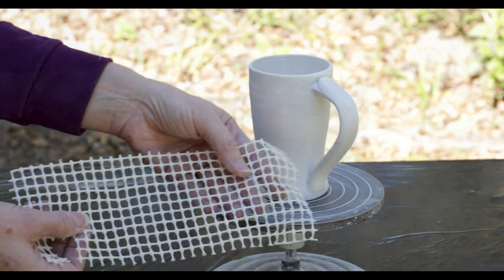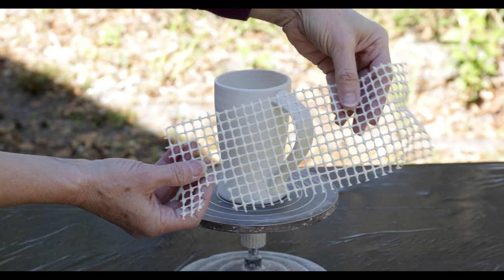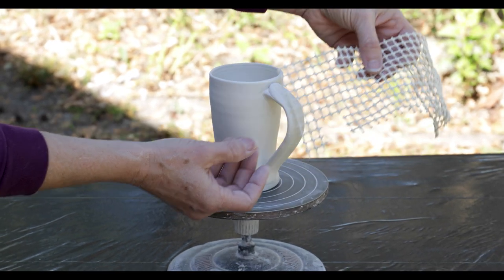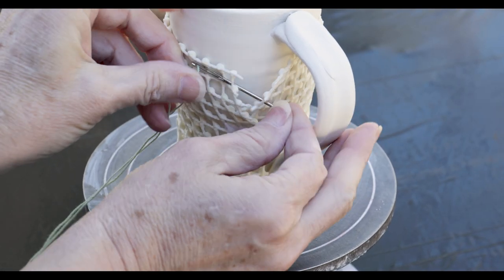For experiment number three, I'll use gridded shelf liner. I cut the shelf liner to fit around the mug and handle. Wrap the liner snugly to the surface and take a couple of stitches to secure it in place, then secure the bottom edge with a thin rubber band.